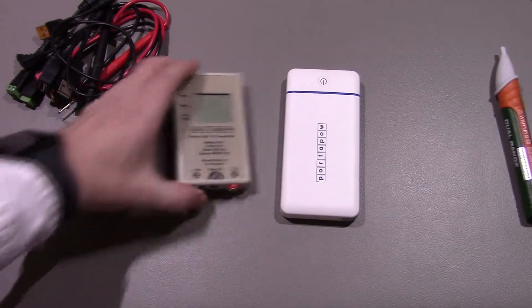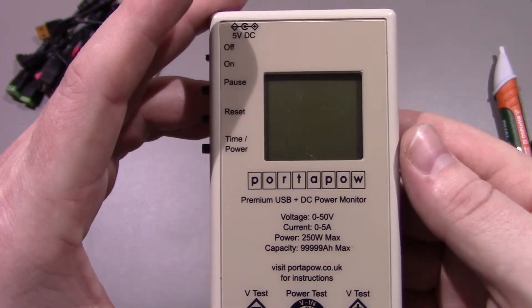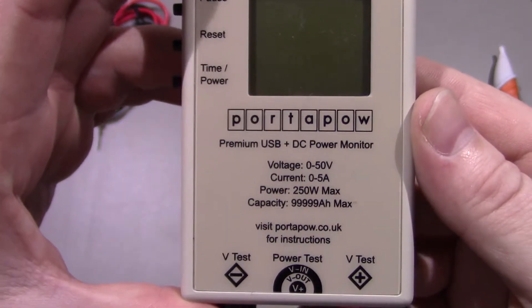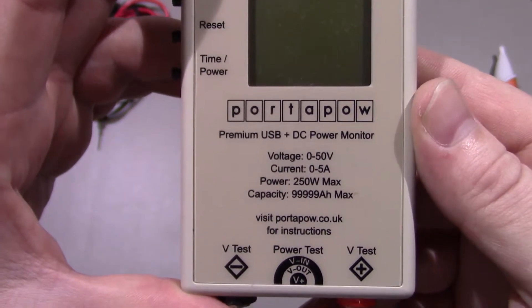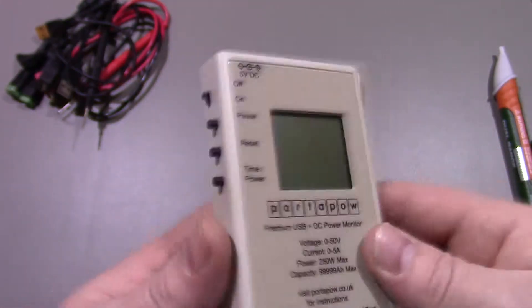So next up, we've got this PortaPal Premium USB plus DC power monitor. Great little device, very handy. You see there measures 0-50V, current 0-5A, and 250W maximum. Now basically, it's a very simple little device.